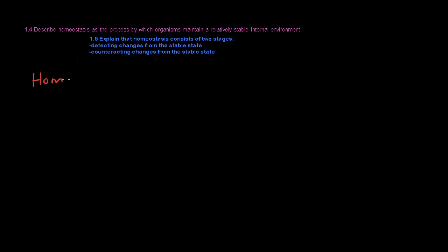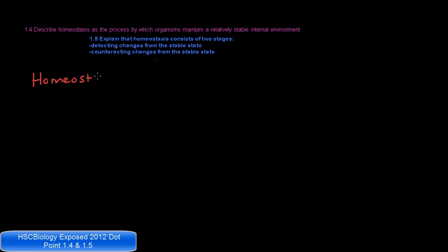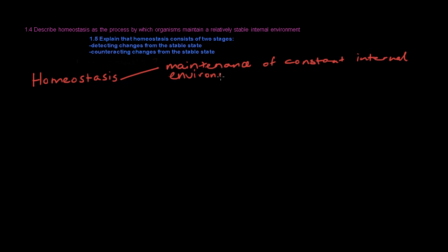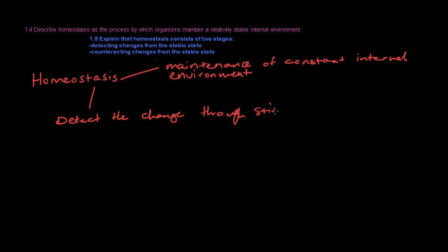Hi, today we will be learning about homeostasis, its two stages of detecting and counteracting changes, as well as how these two stages work. Homeostasis can be defined as maintenance of a constant or near-constant internal state, regardless of external environmental changes through the detection of stimuli and creation of appropriate response.